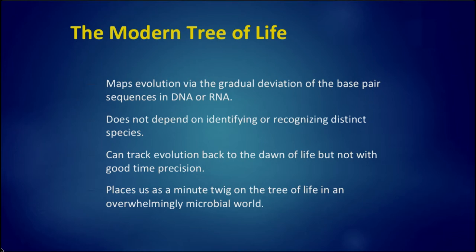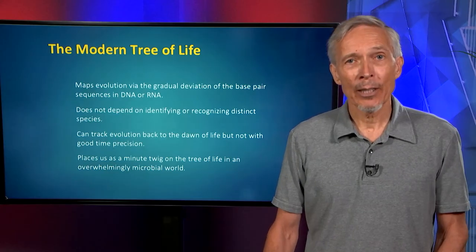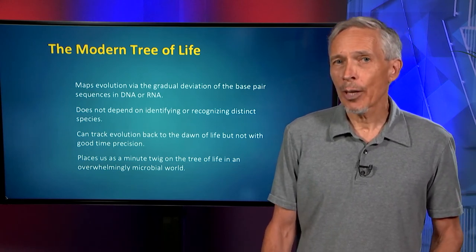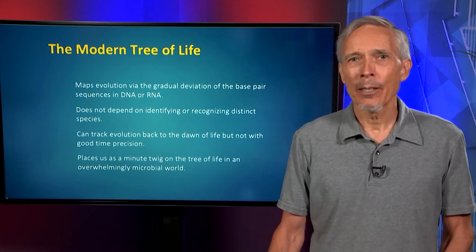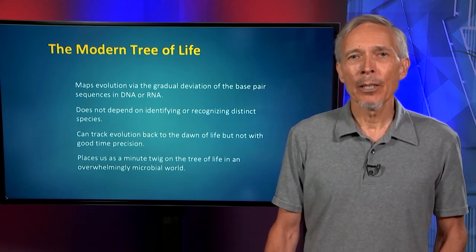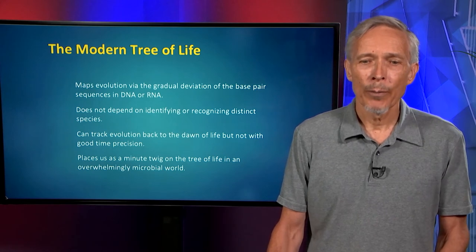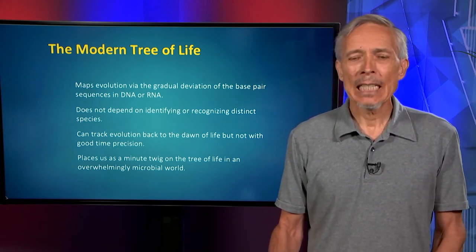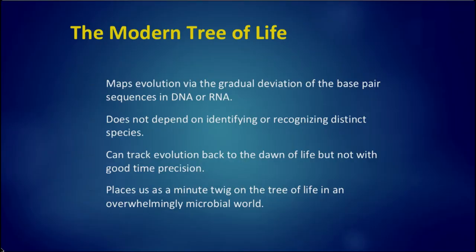There is no good time precision, though. As opposed to body fossils, which are minerals where radioactive decay can be used to date the minerals very accurately, genetic material divergence depends on an evolutionary clock that is not very well calibrated. So our time precision of projecting the tree of life back, especially billions of years, is quite poor. All of this information places us, humans, as a tiny twig on the tree of life in an overwhelmingly microbial world.